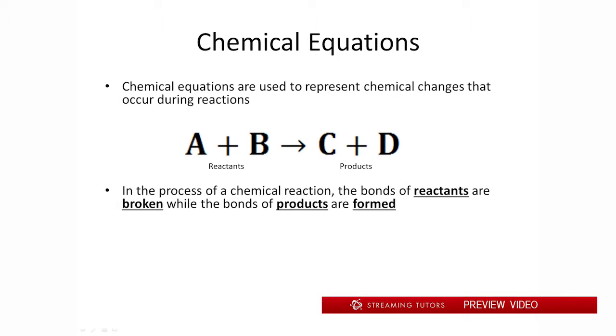Now a chemical reaction entails the breaking of reactant bonds. So we break the bonds here and then we reform those bonds in different variations to form the products. So here we're forming bonds.